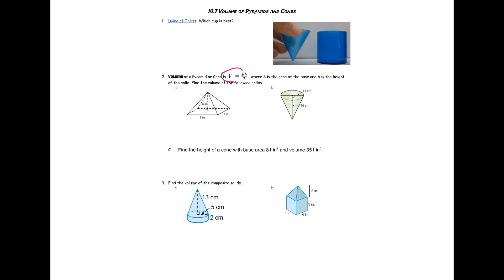You have the formula right here: volume equals the area of the base times height divided by three. On question 2a we want to find the volume of that pyramid. To do that we need the area of the base times the height divided by three. The area of the base is a rectangle, so it's going to be 8 times 7 which equals 56. The height of the pyramid is 6.